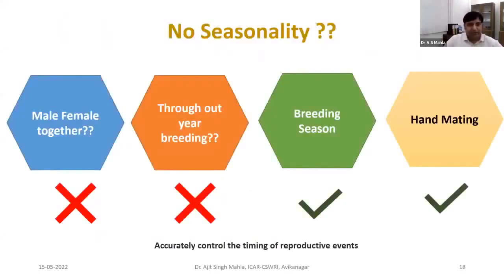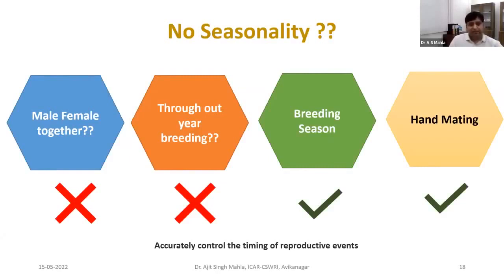There are limited areas where there is seasonality in sheep and goat; in tropical and subtropical areas there is no seasonality. Even so, we are not able to achieve three lambings in two years. When male and female are living and grazing together, we cannot identify whether an animal is coming into estrus, fertile, or infertile. We must change our management practices. First, separate male and female so we can go for hand mating after estrus detection. We should restrict the breeding season — artificially create a breeding season in sheep and goat — dividing it into two to three months per year.